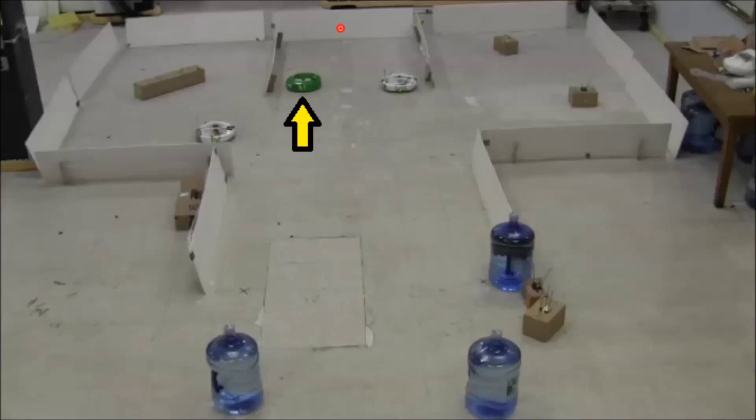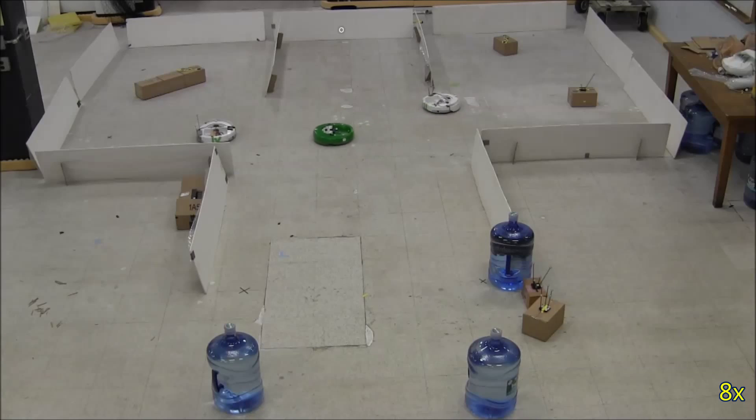The green robot sees the light on and interprets it as a help request coming from the robot in depot 1, so it turns off the light and goes to help that robot.